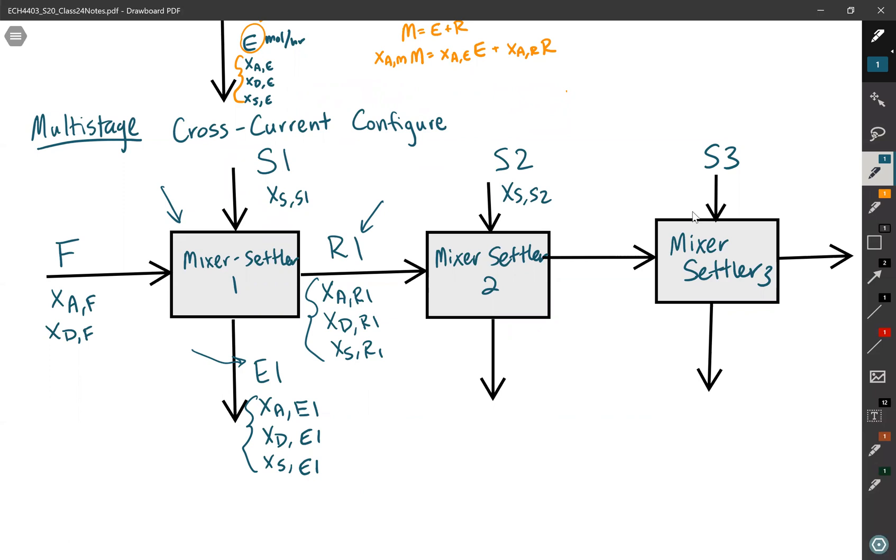Once you know what the raffinate is, and assuming you know what the flow rate of the solvent to mixer settler 2 is, you could then solve for mixer settler 2. And that would enable you to find what the flow rate of R2 is, along with the mole fractions of everything in the raffinate phase. Same variables. And just to highlight, my naming convention is, I like to say x first subscript is the component, second subscript is the stream. It's a little bit clunky, but if you're careful about it, it's helpful in making sure you don't get confused. So, xd,e2 and xs,e2.